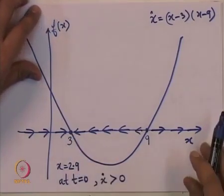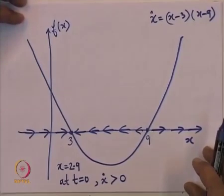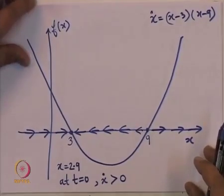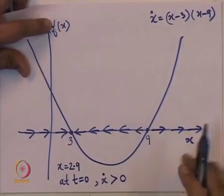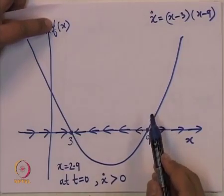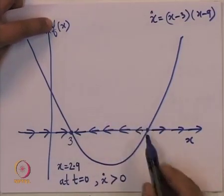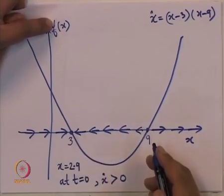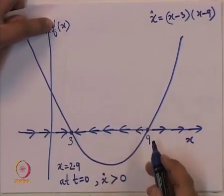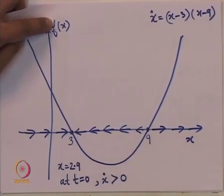In the context of Lyapunov's stability, we will see more precise definitions of stable, unstable, and asymptotically stable equilibrium points. For now, for a scalar system, looking at the graph of f versus x, we are able to decide which are the equilibrium points and whether they are stable or unstable.